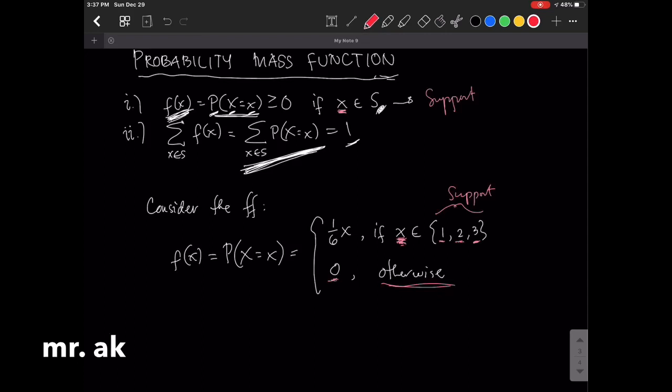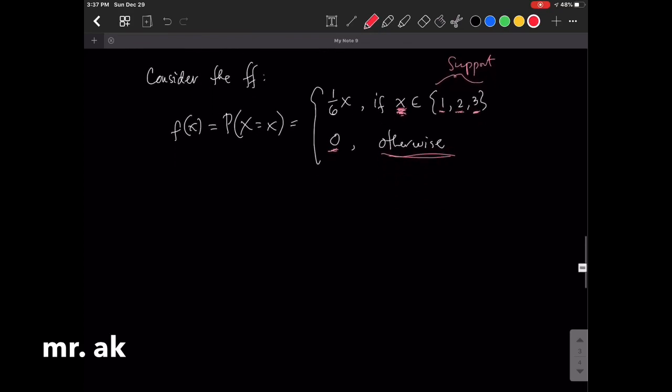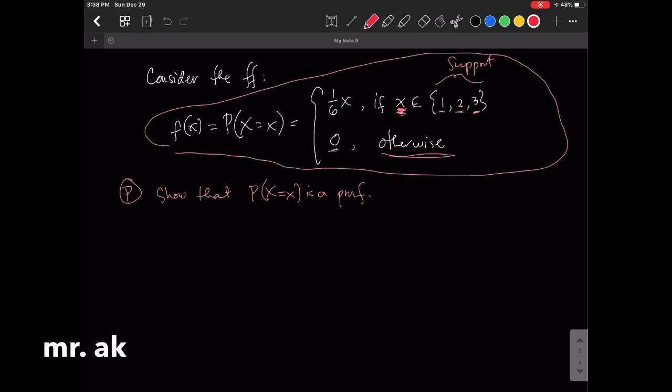So this one, let's consider that. The problem is, show that this is a probability mass function. And how do we do that? We do that by using the two conditions.